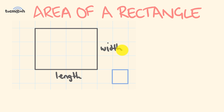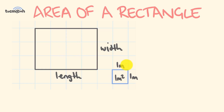When describing the area of a two-dimensional shape, we need to use special two-dimensional units — square units. For example, meters squared: one meter squared is literally one meter by one meter. We could also have centimeters squared, which would be one centimeter by one centimeter, or inches squared, which would be one inch by one inch.